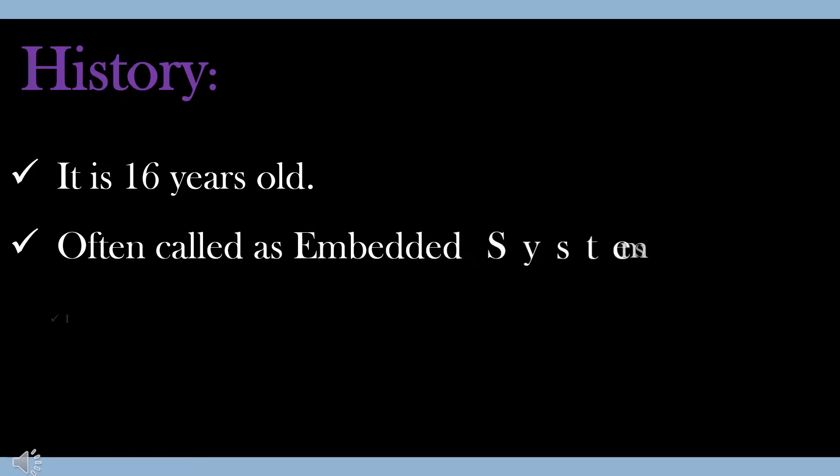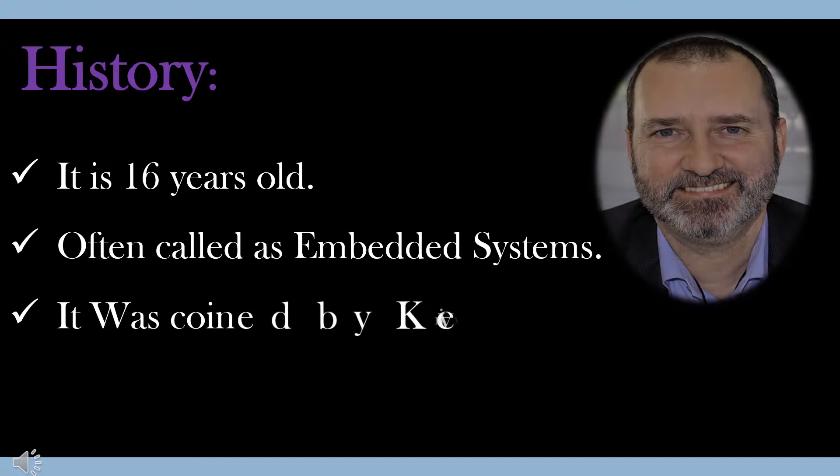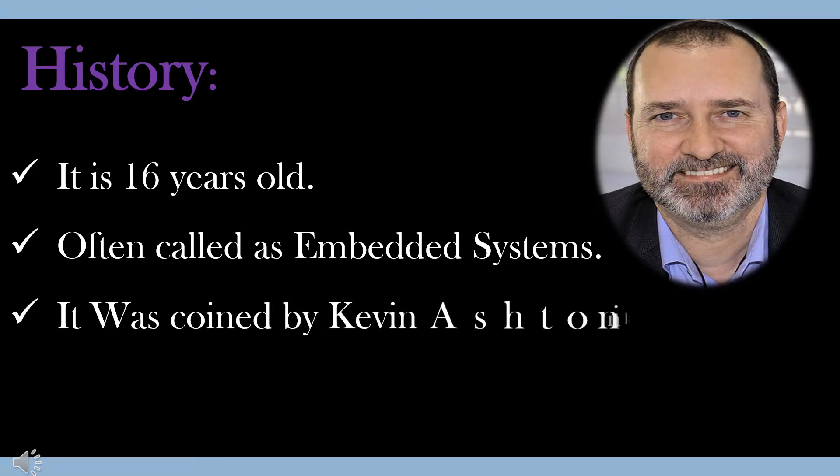Now, let us take a glance of its history. The term Internet of Things is 16 years old. This IoT is often called as Embedded Systems. The actual term Internet of Things was coined by Kevin Ashton in the year 1999.